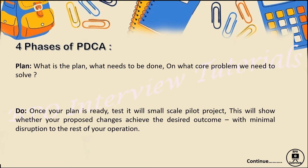The next phase is Do. Once you are ready with your plan, you will test it with a small-scale pilot project. You will test it in small parts and see whether the proposed changes achieve the desired outcome with minimum disruption to the rest of the operation. Small errors or problems that are minimal and not impacting the overall process are acceptable. In the Do phase, you identify what advantages or improvements you are getting.